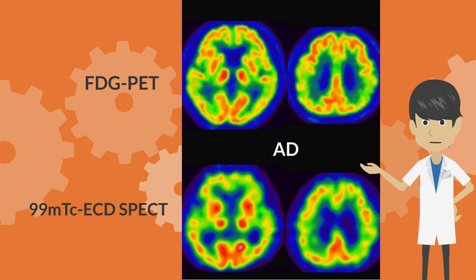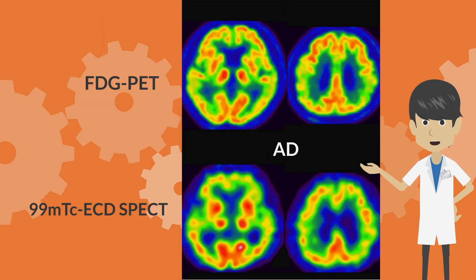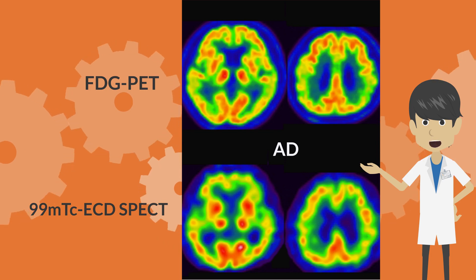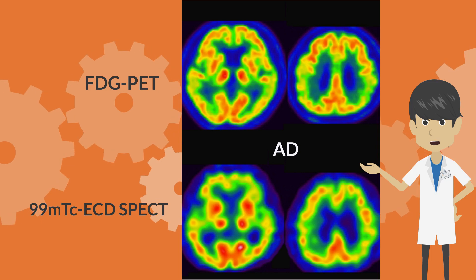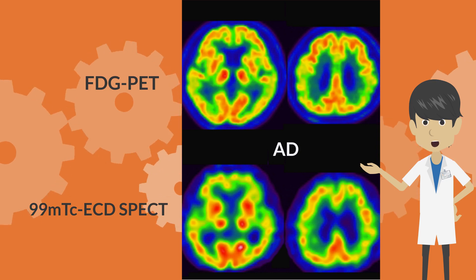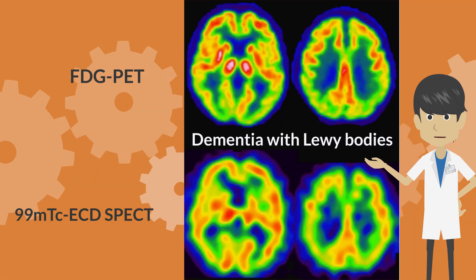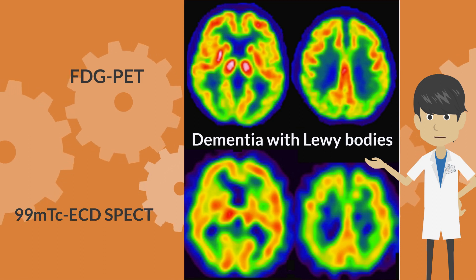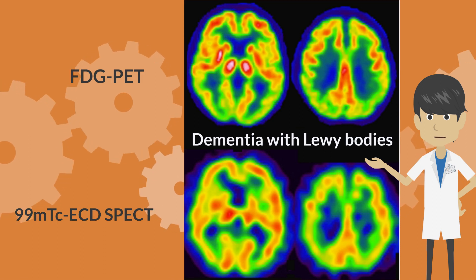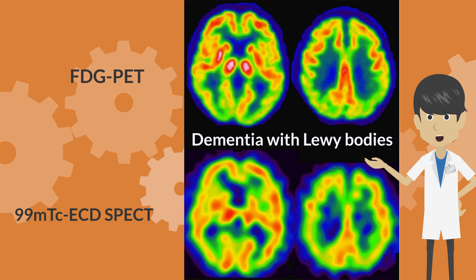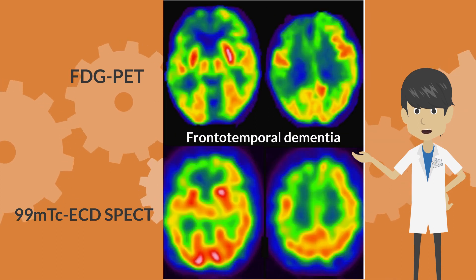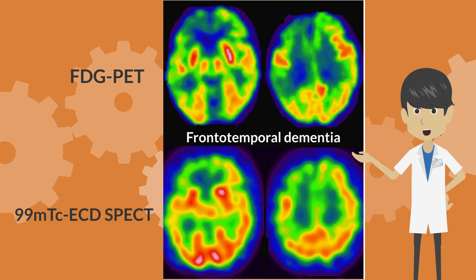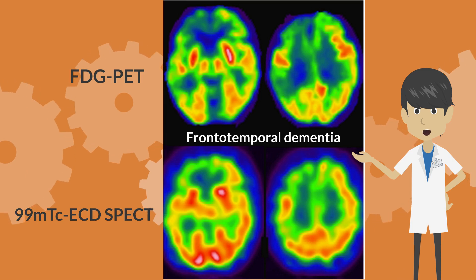Comparing PET and SPECT in the same case of Alzheimer's disease, bilateral temporoparietal decreased accumulation is more evident in PET but is also seen in SPECT. In dementia with Lewy bodies, the pattern of decreased accumulation in the occipital and parietal lobes is similar in PET and SPECT. In frontotemporal dementia, the pattern of decreased accumulation in the frontal and temporoparietal lobes is similar in PET and SPECT.